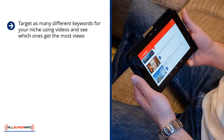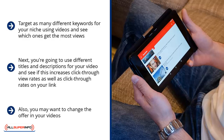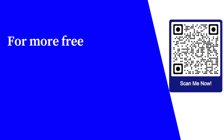Target as many different keywords for your niche using videos and see which ones get the most views. Once you've identified keywords that get the most views or traffic, come up with better videos for them. Use different titles and descriptions for your video and see if this increases view rates as well as click-through rates on your link. Stick to videos that send traffic which actually converts. You may also want to change the offer in your videos — maybe instead of a direct link to the affiliate product, promote your squeeze page instead and see which approach leads to better conversions.